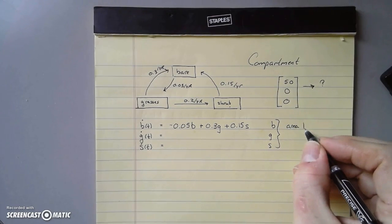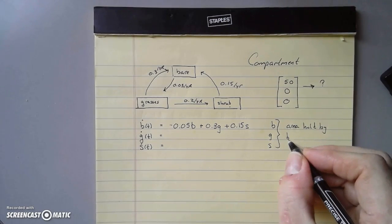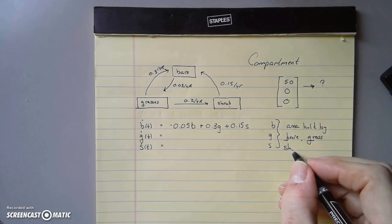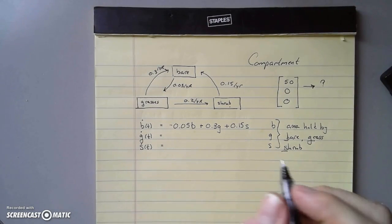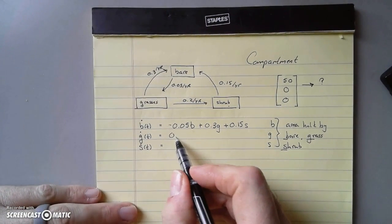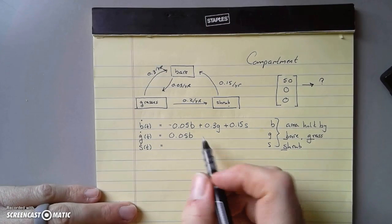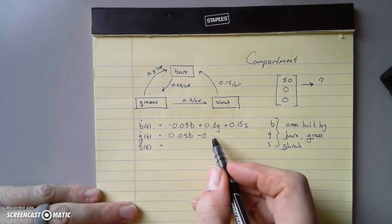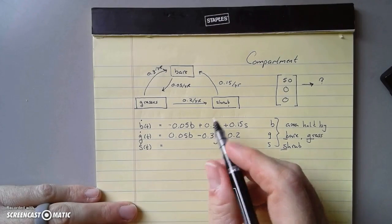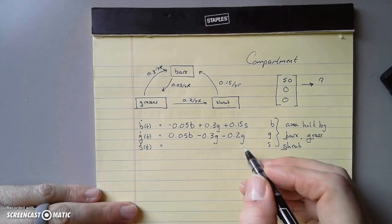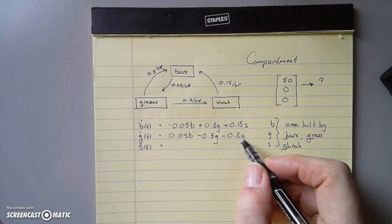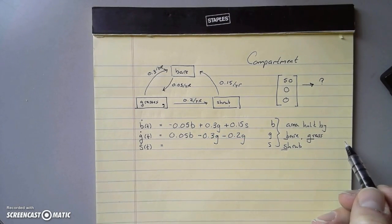What about grassy ground? We get some from bare ground - we obtain 5% of any bare ground per year becomes grass. But we're losing 30% of whatever we have and we're also losing 20% - losing 30% to become bare and 20% is colonized to become shrubs.